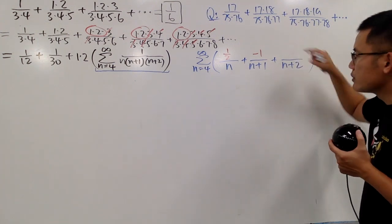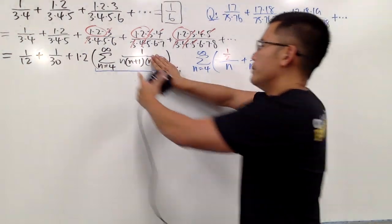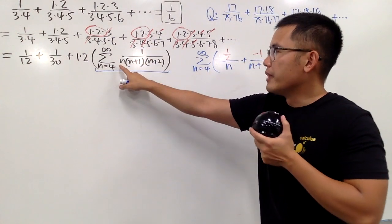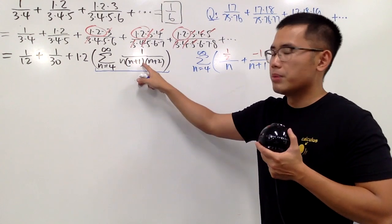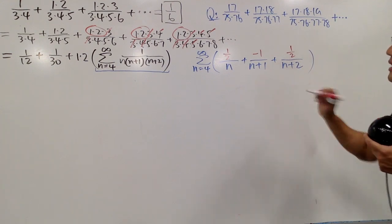And to figure this out, we will have to come here and cover this up, and let it equal to negative two. Put it here, put it here. We have one over negative two times negative two plus one, which is negative one. All in all, we get positive one half, like this.